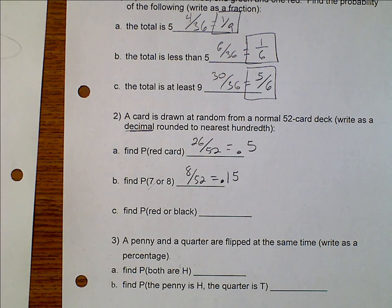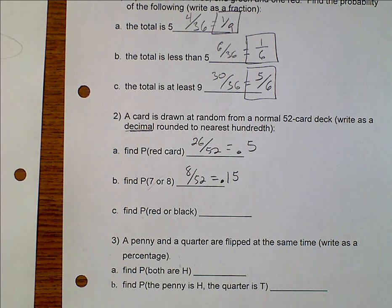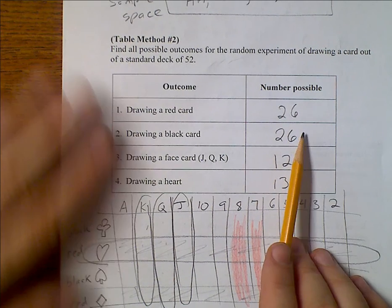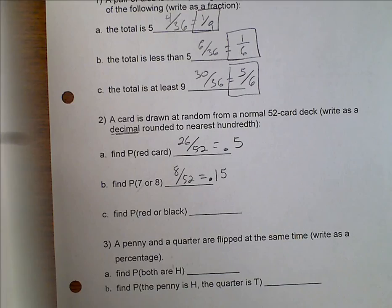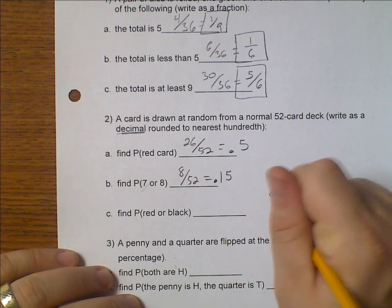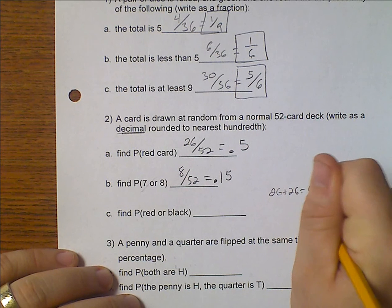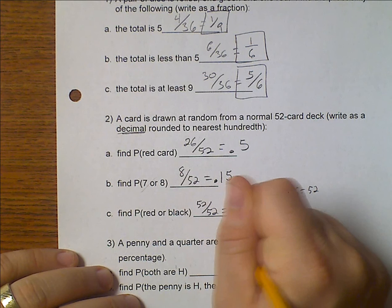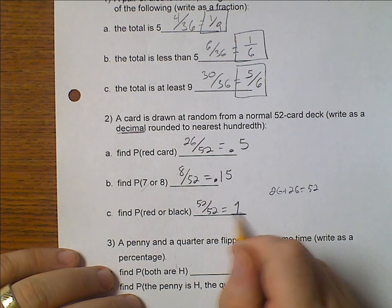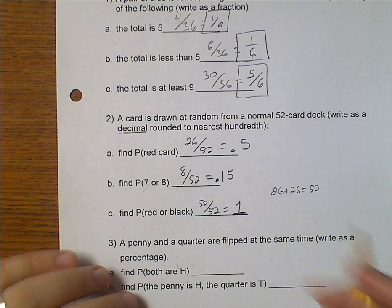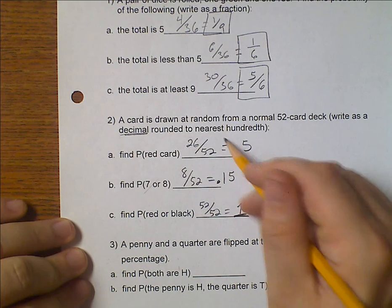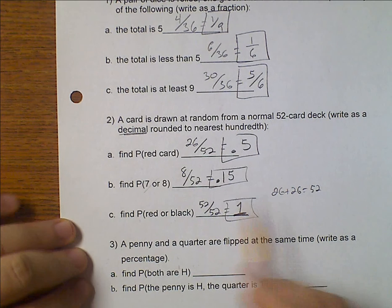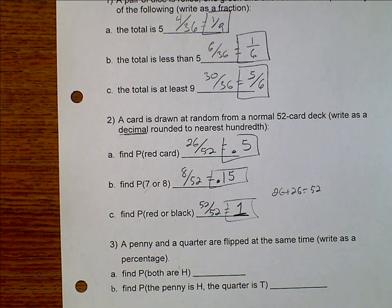And finally, the probability that it is either red or black. If we look at this, 26 were red plus 26 were black. So that would be 26 plus 26 equals 52. So 52 over 52 is 1 whole, which is our answer. This is certain to happen. You are guaranteed to get either a red or a black. You're not going to get purple or green in a standard deck of cards.